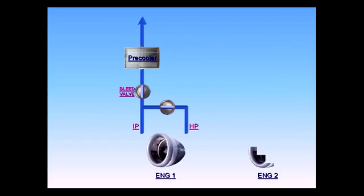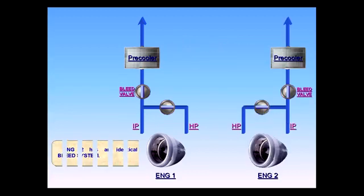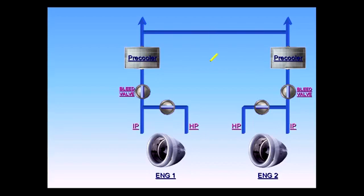Engine two has an identical bleed system. Both systems are connected by a cross-bleed duct. A cross-bleed valve permits their interconnection or isolation.